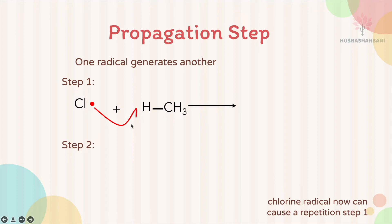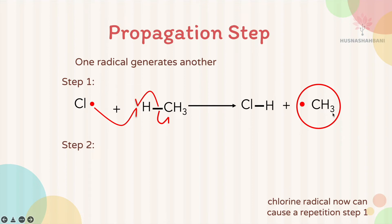This bond breaks: one electron forms a bond with Cl, and one more electron transfers back to the carbon in methane. When this carbon has one unpaired electron, it becomes the methyl free radical (CH₃•). The Cl uses its electron to form a bond with the hydrogen's electron, producing HCl as a single bond and generating the CH₃ free radical.